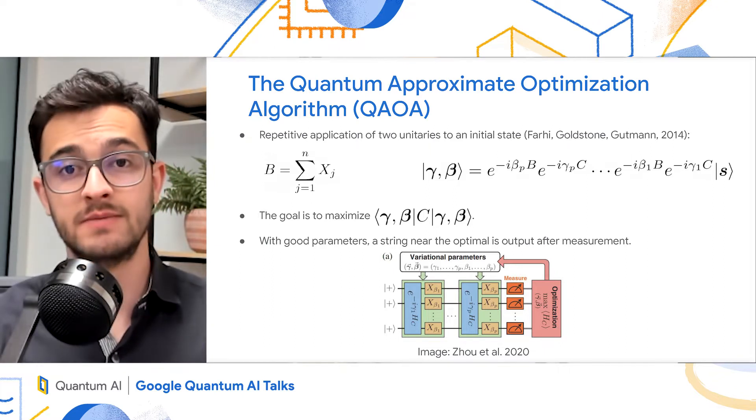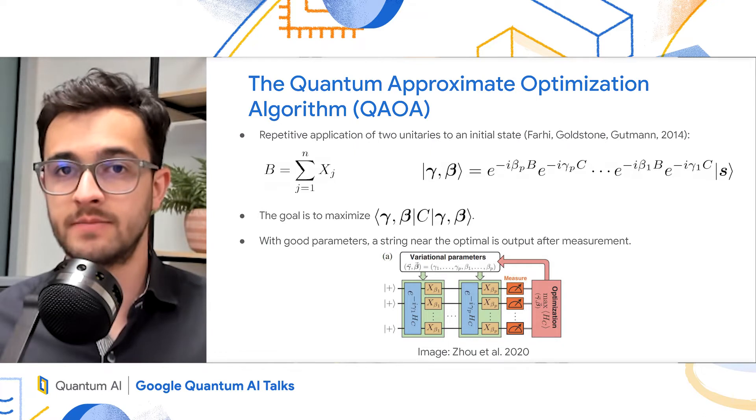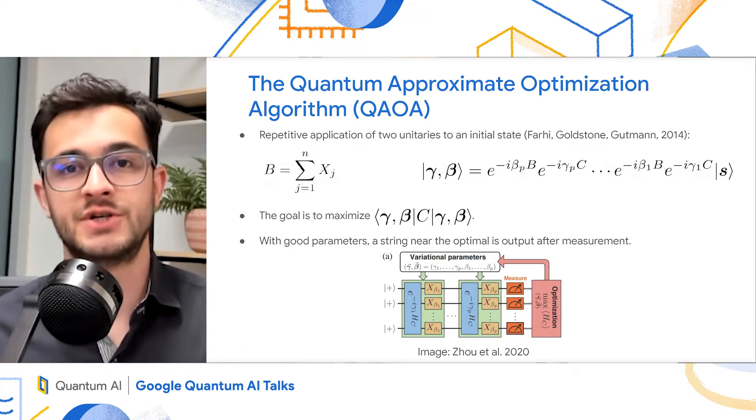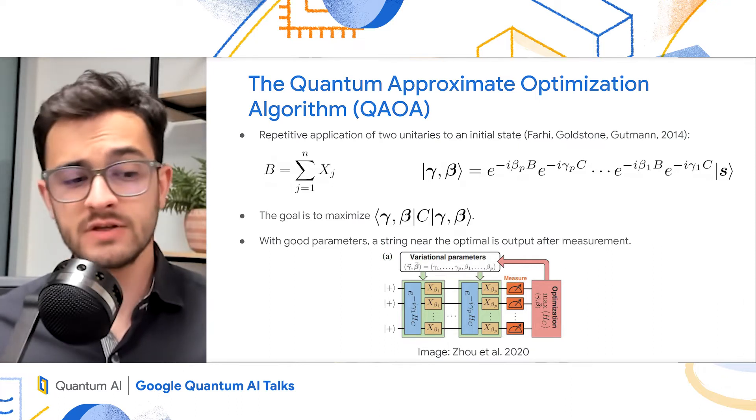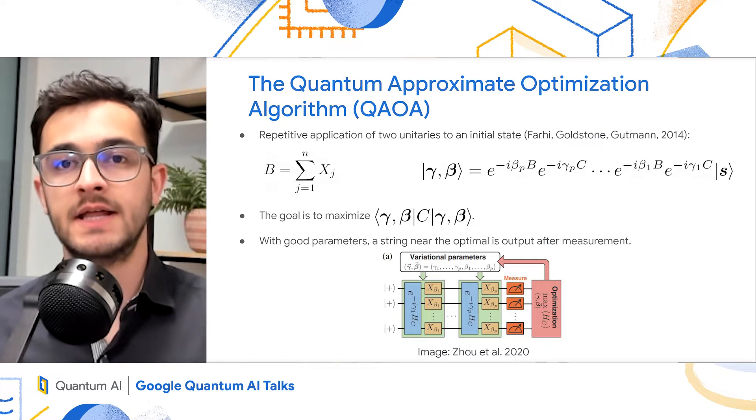And then you do that again with gamma 2 and beta 2, all the way to gamma p and beta p. So there are 2p parameters, and the goal is to pick these parameters in a way that maximizes the probability that you measure a string near the optimal. So you can think of this as a hybrid algorithm where you classically update the gammas and the betas.